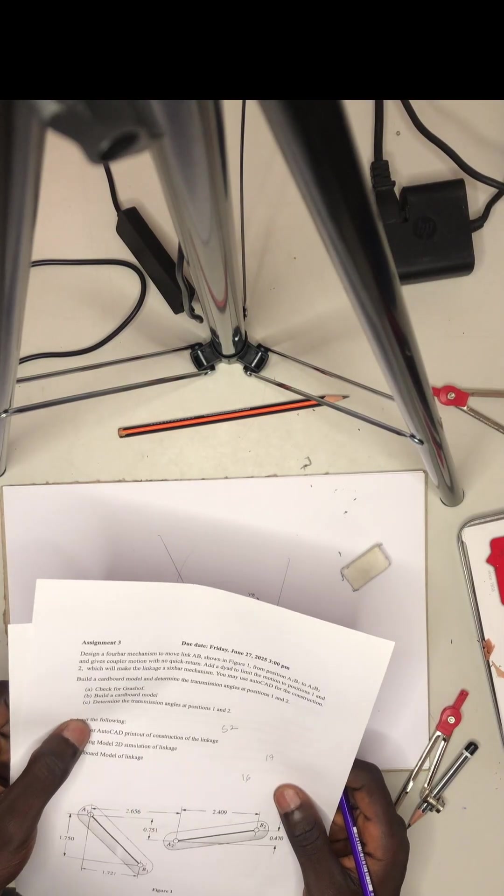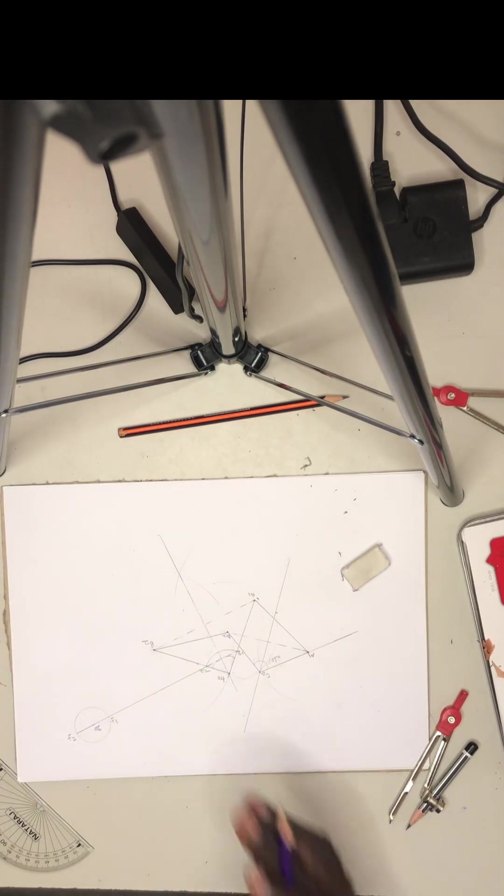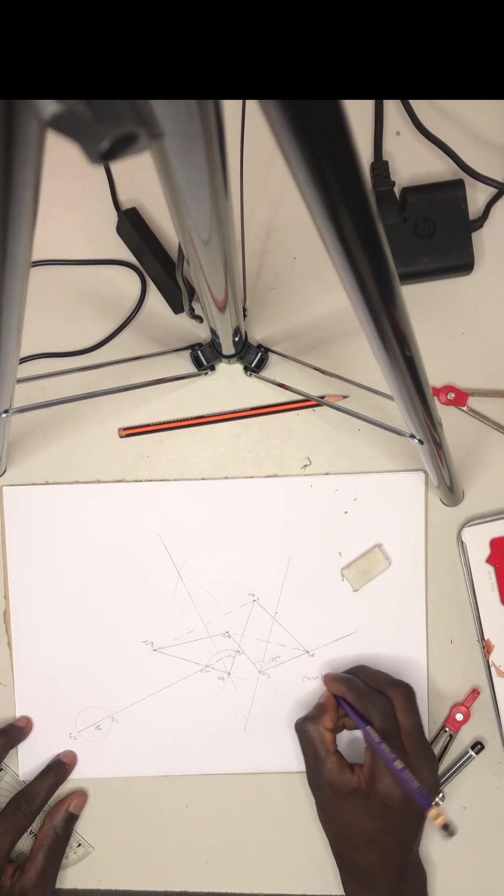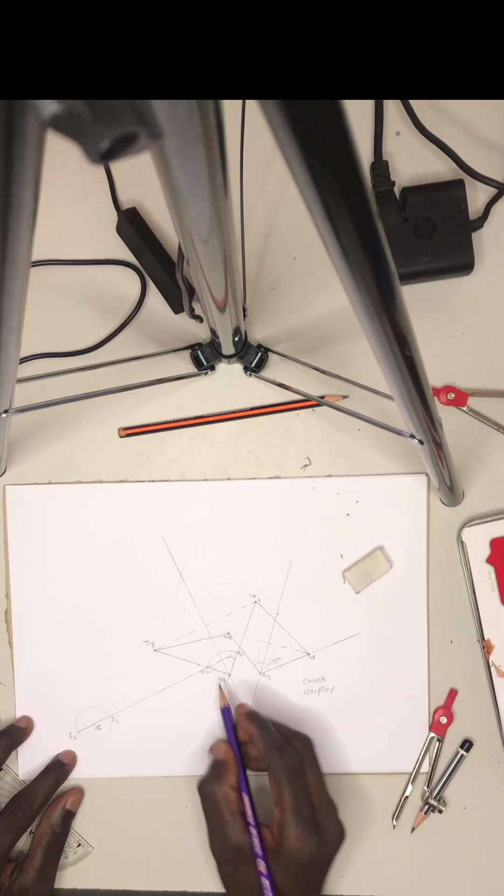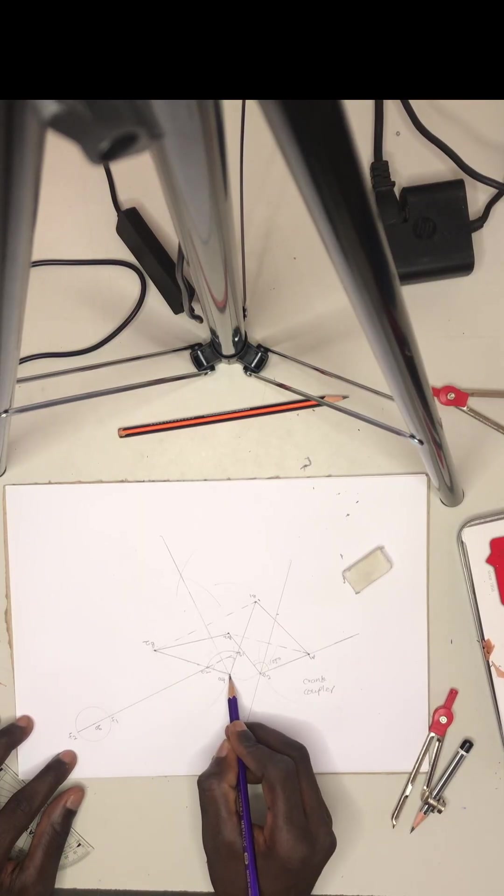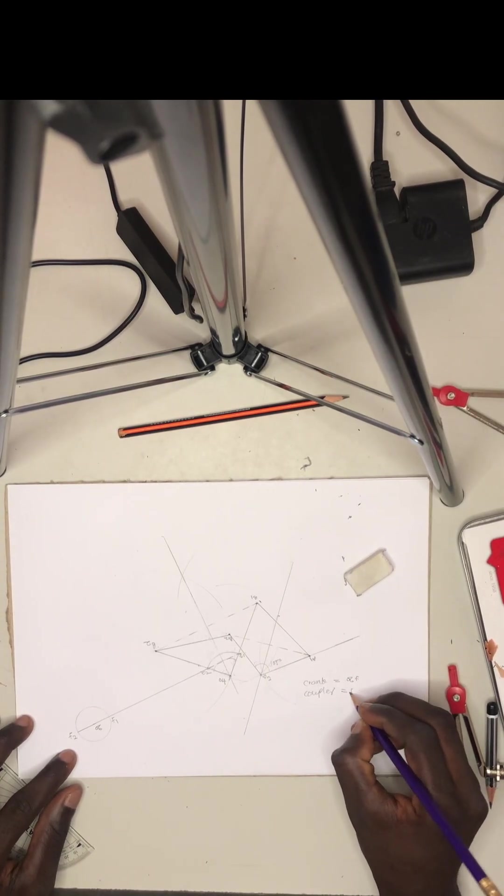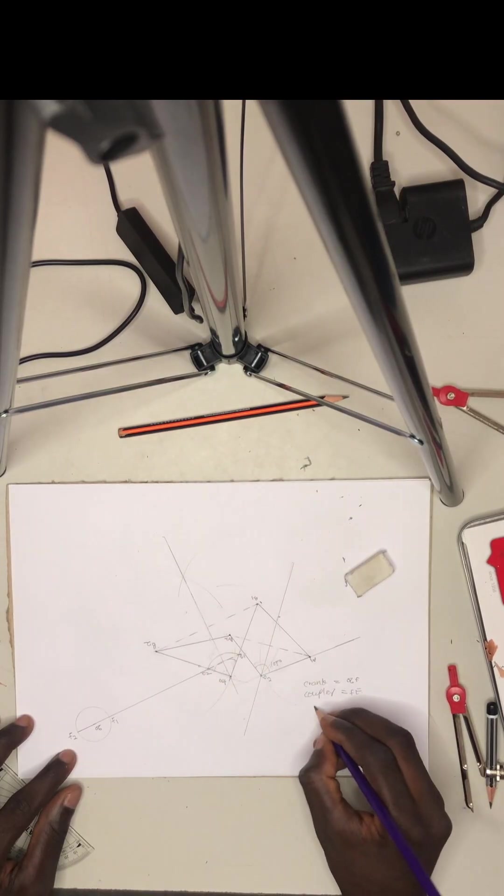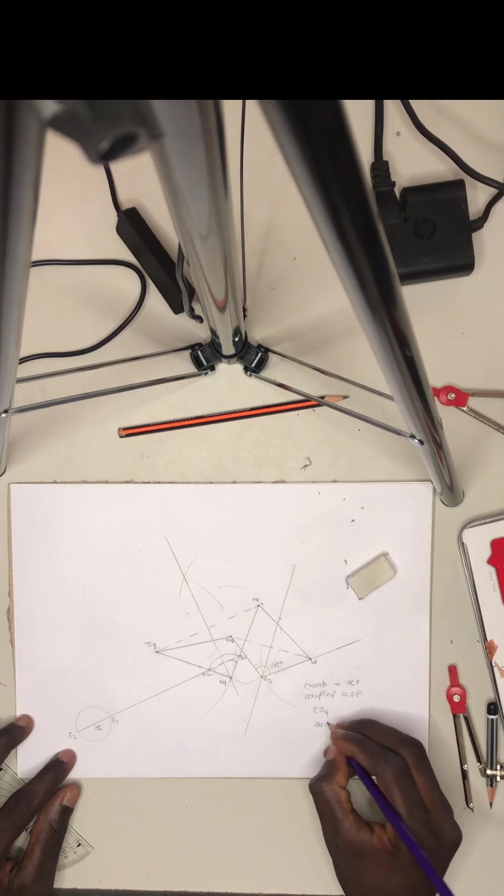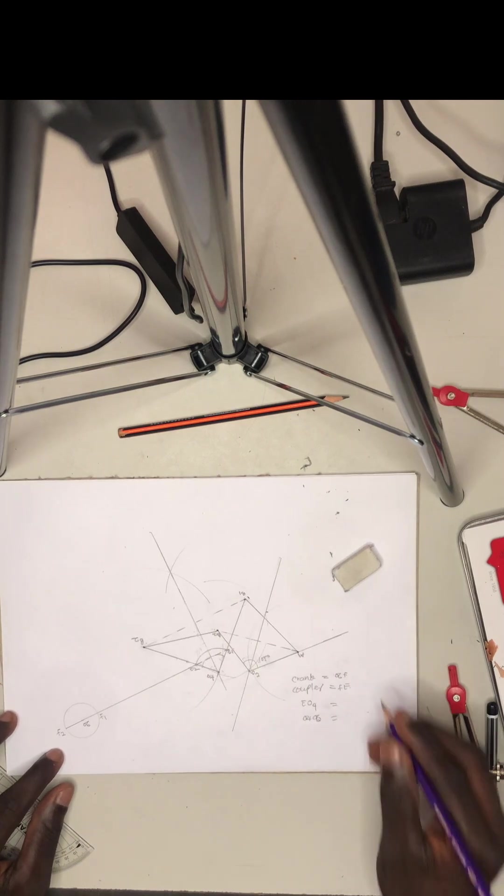Now the question is to check for Grashoff and determine the transmission angles at position 1 and 2. To check for Grashoff, pay attention. This is just a driving mechanism. It is the crank, coupler, and the point the coupler attaches the output length and the ground. The crank which is O6F, the coupler which is FE, and then this length which is E04, and then the ground point which is O4, O6. It is these four lengths that we use to check for the Grashoff.